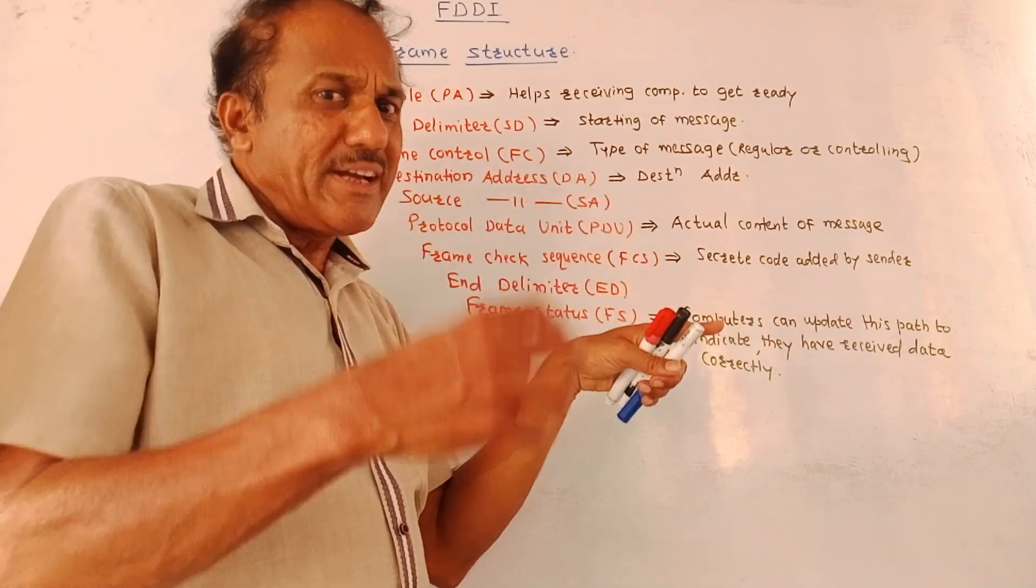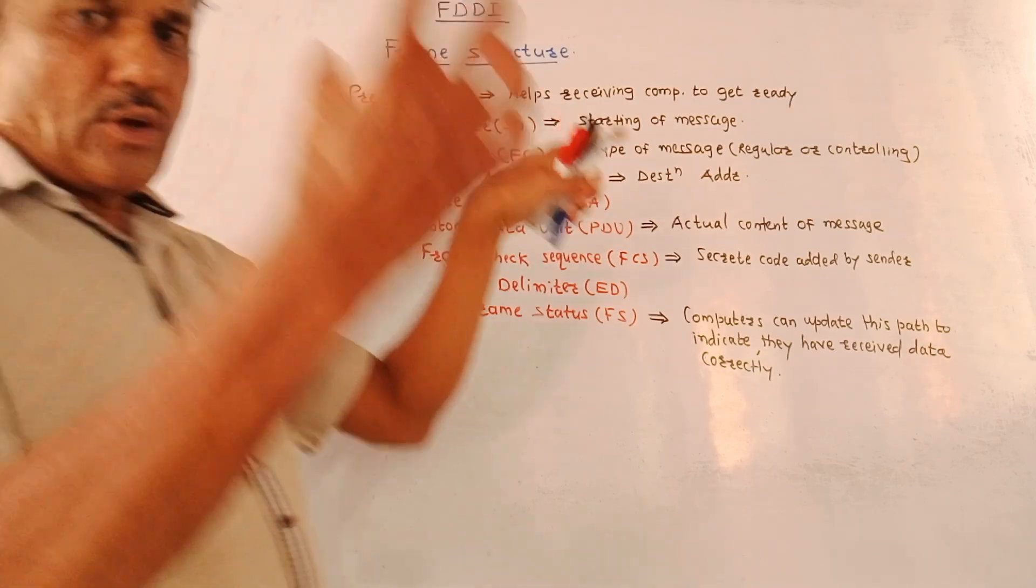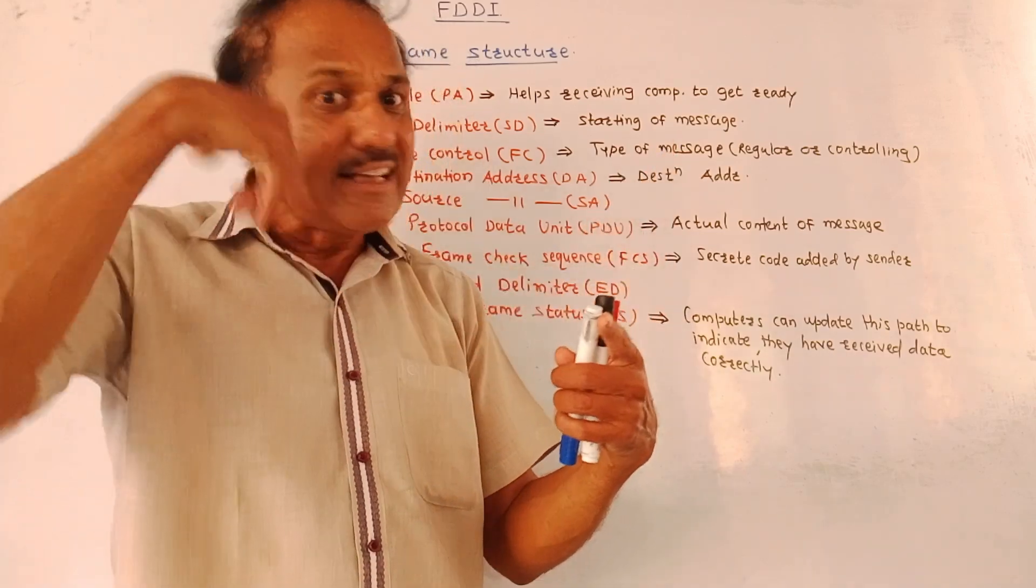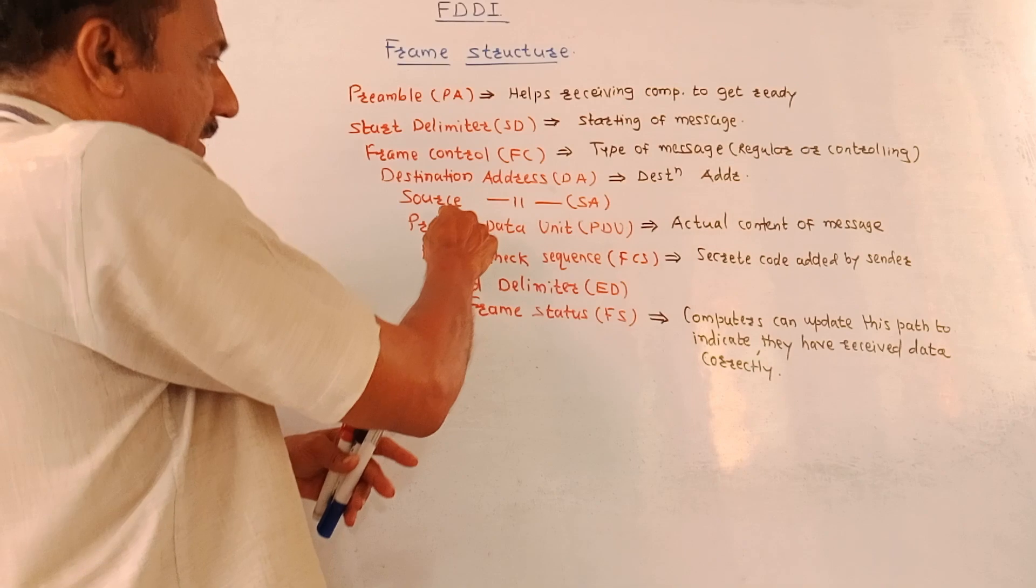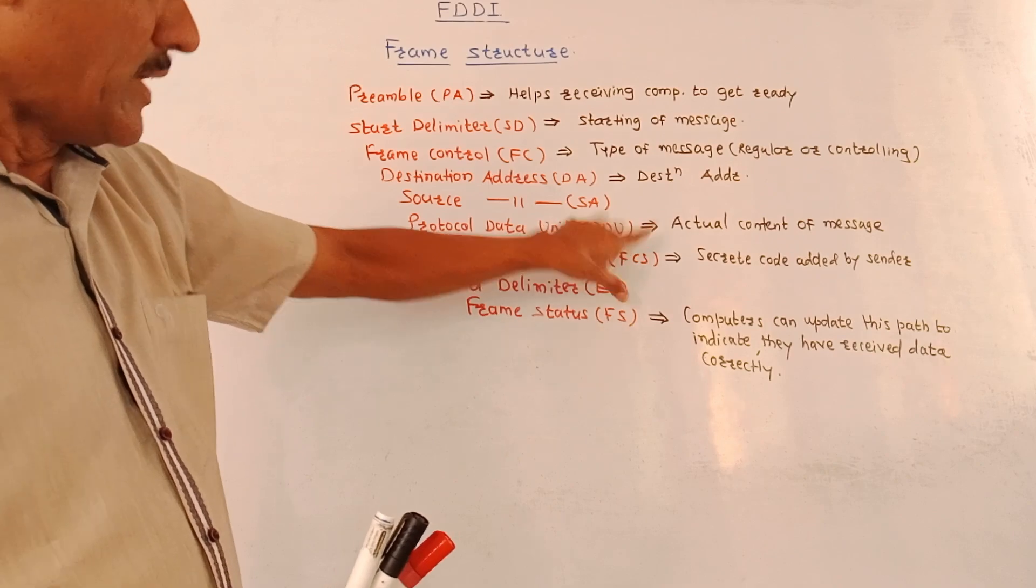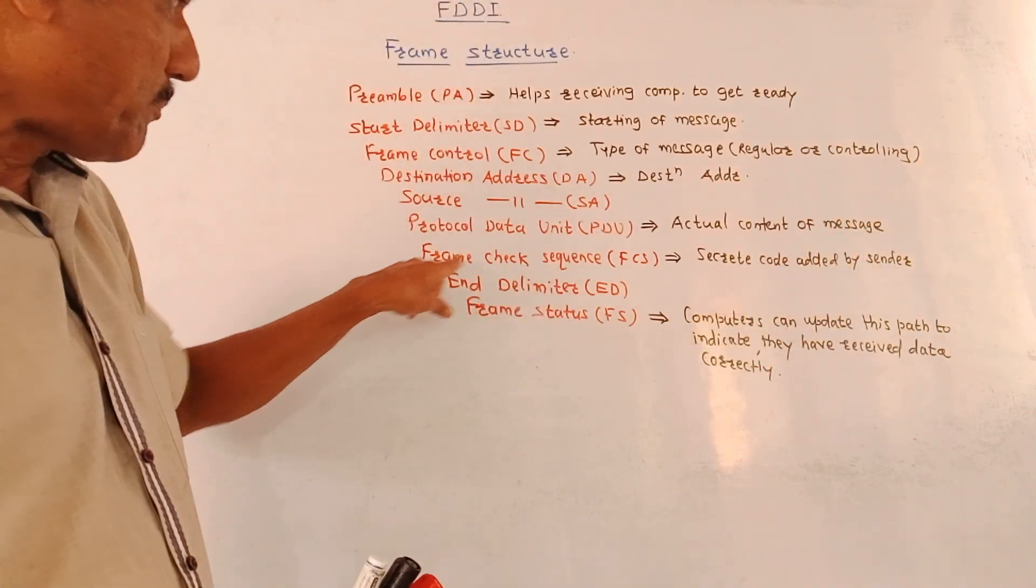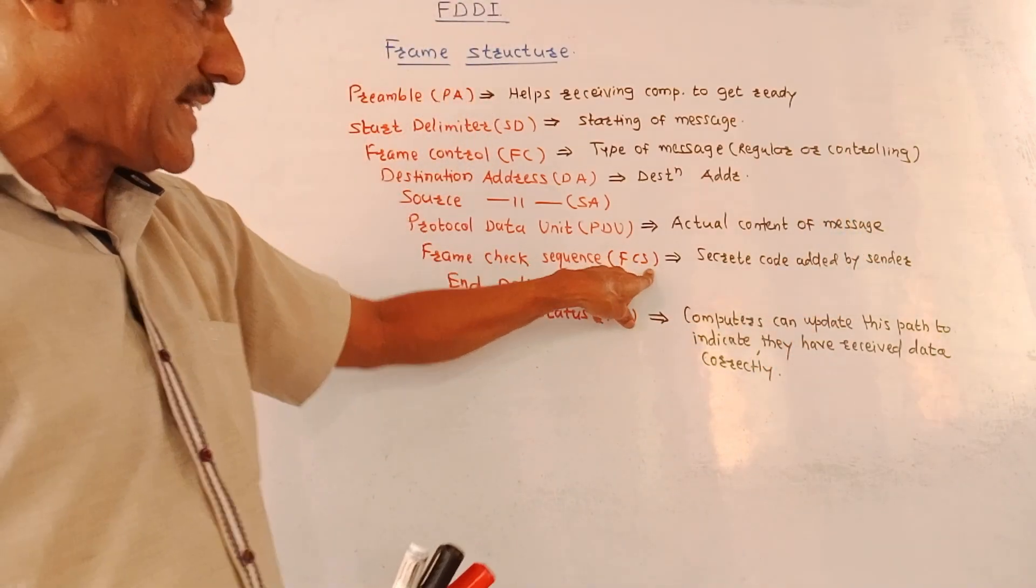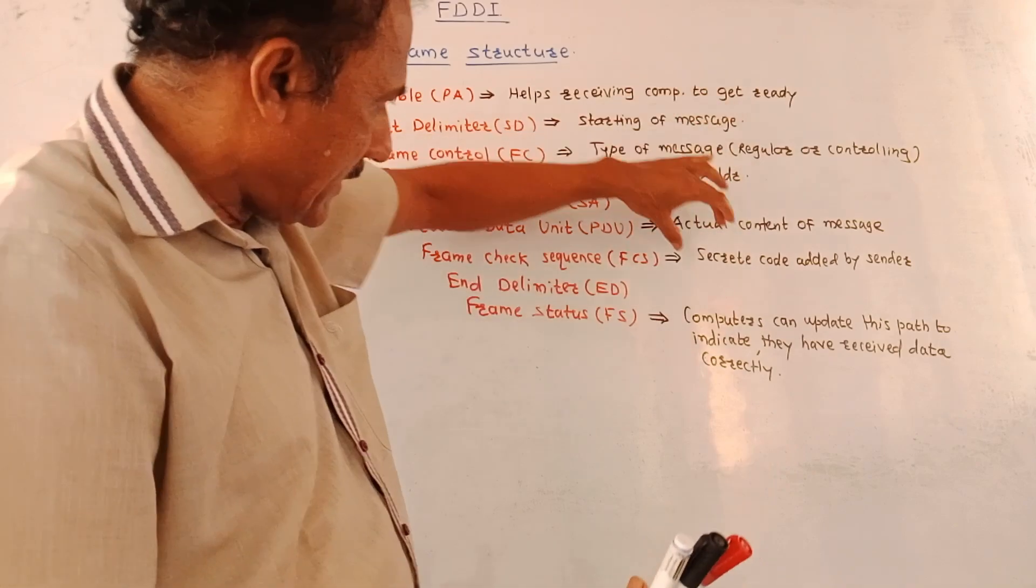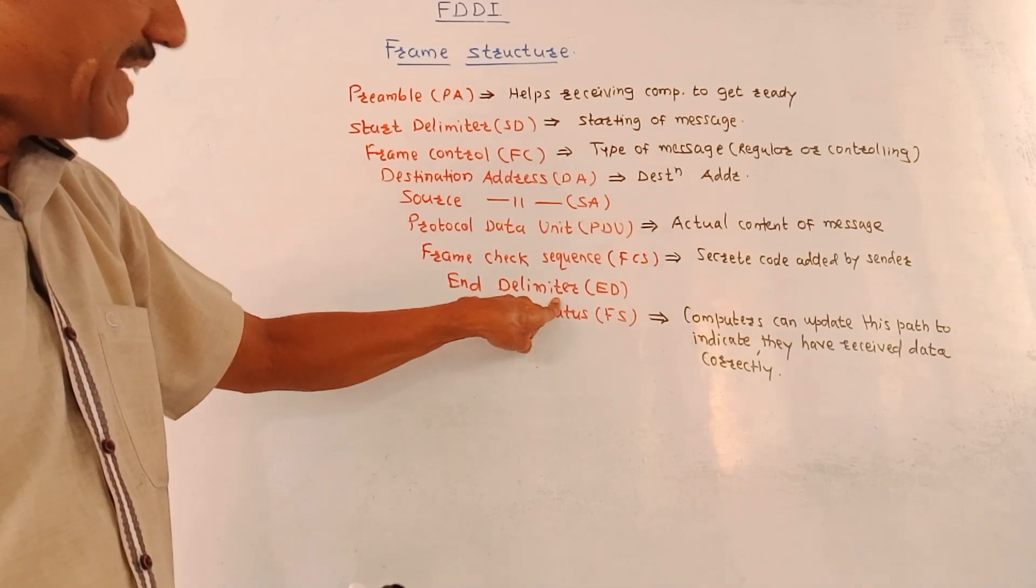Then destination address. Very simple. It gives the idea of the receiving address, that is destination address. Similar to this, we have SA, that is source address. It gives the information about the source address. That means, which computer is sending the data, transferring the data. That information is given by this part, that is source address SA. Then protocol data unit, that is PDU. This is the important portion which indicates the actual content of the message. Next is frame check sequence, that is FCS. Certain secret code is given by the sender computer, transmitting computer. This idea of this secret code is given by these bits, that is FCS.